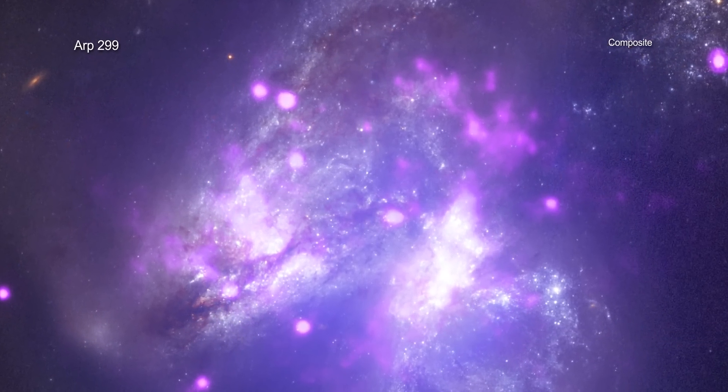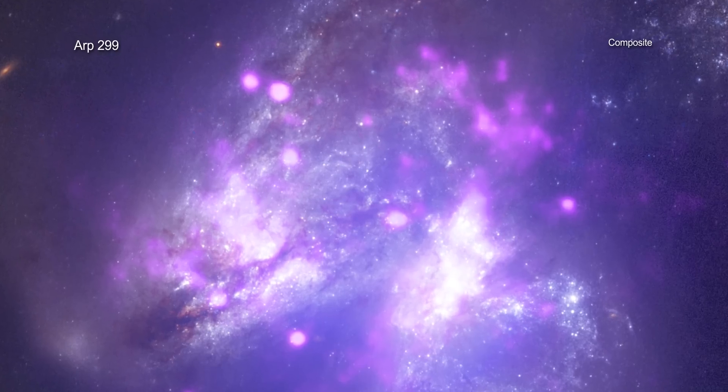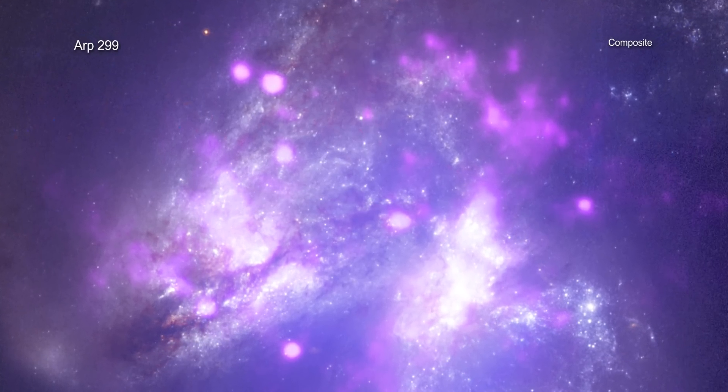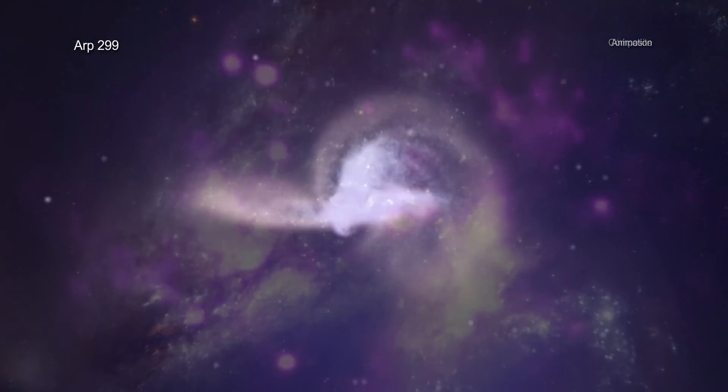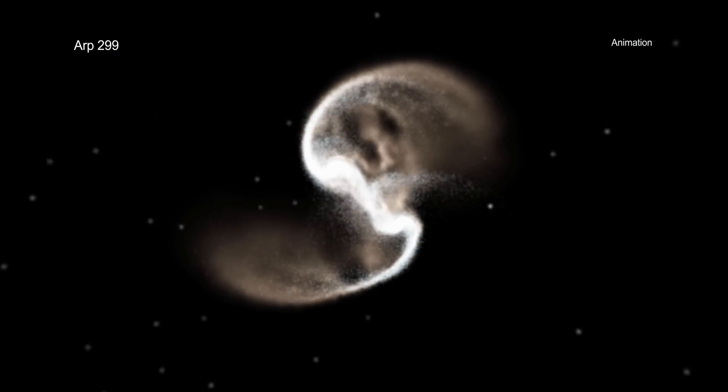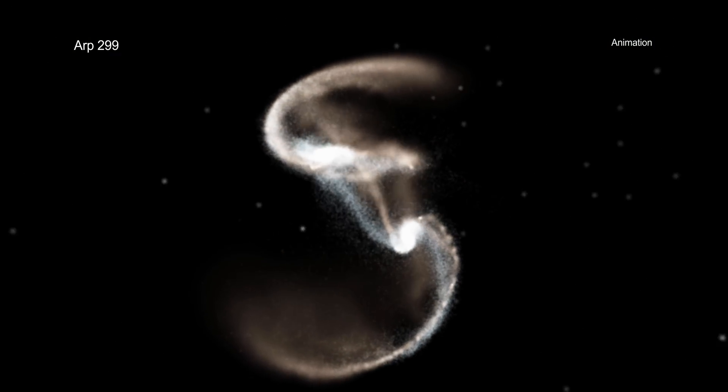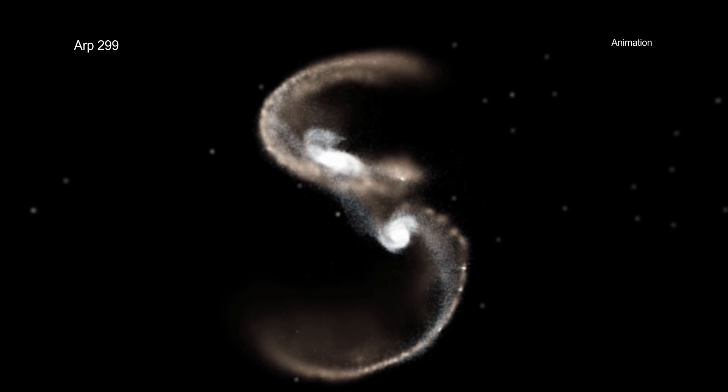ARP 299 is a system located about 140 million light-years from Earth. It contains two galaxies that are merging, creating a partially blended mix of stars from each galaxy in the process.